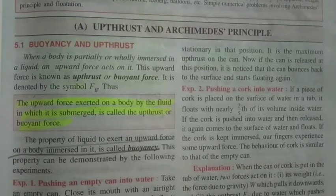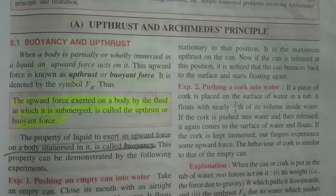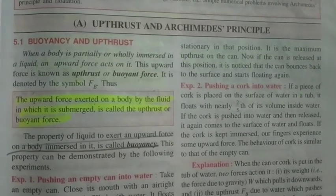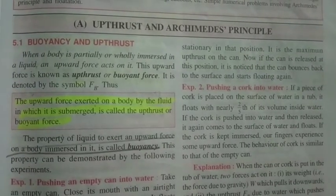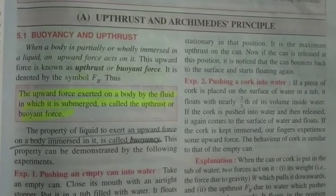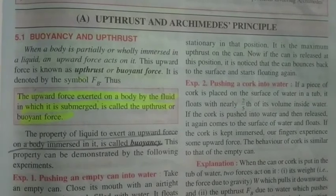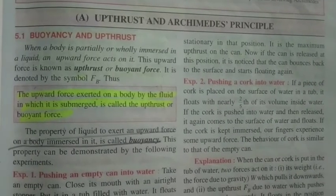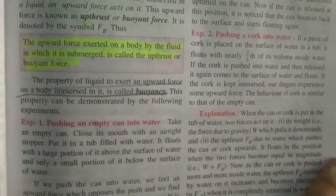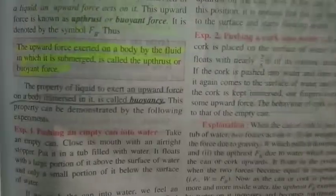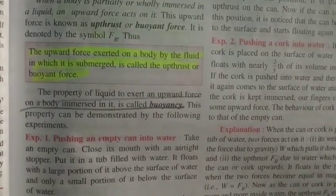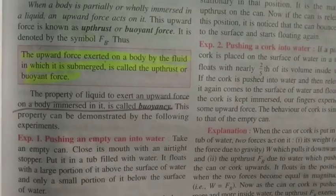In the previous chapter, we read that liquid exerts pressure in all directions. But here, the upward pressure is exerted by the liquid on a body which is submerged in water. So when a body is submerged in liquid, the liquid exerts an upward force on the body. That's called upthrust or the buoyant force. And the property of liquid responsible for this is called buoyancy.